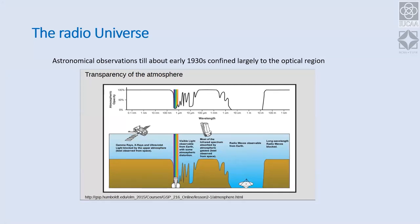At long wavelengths, below about 10 MHz — which varies with the solar cycle and location — the ionosphere above Earth cuts us off from receiving signals from outer space. To observe at lower frequencies you would have to go outside the ionosphere, either with spacecraft or, someday, a telescope on the Moon.